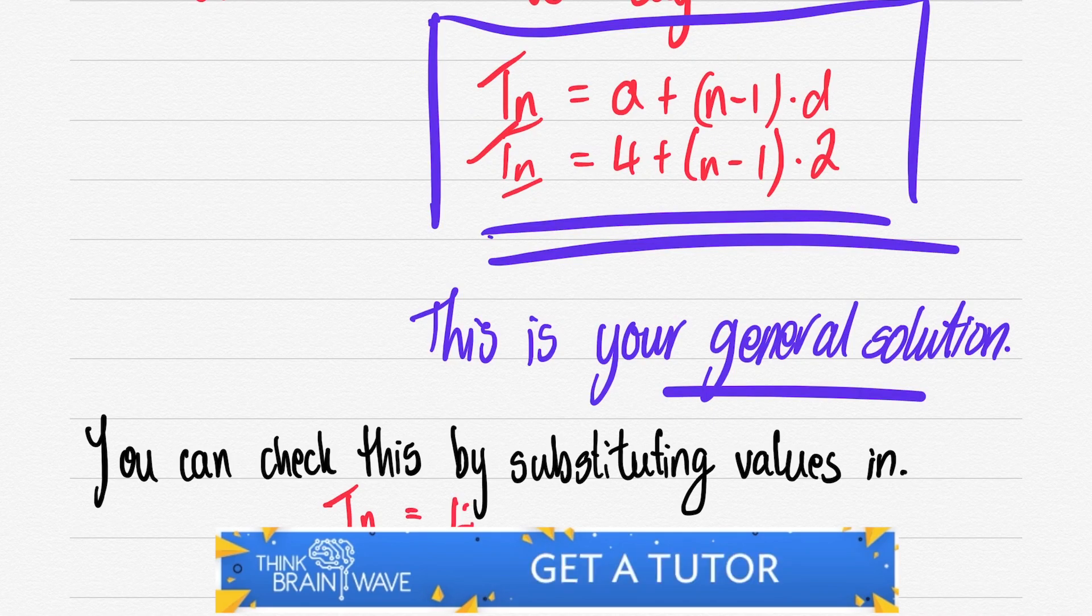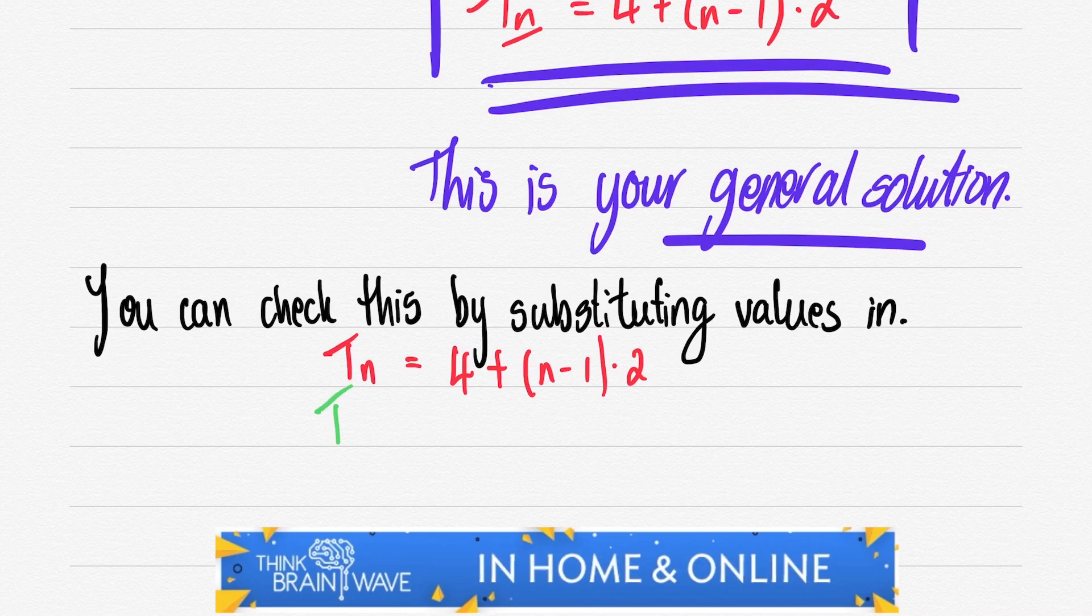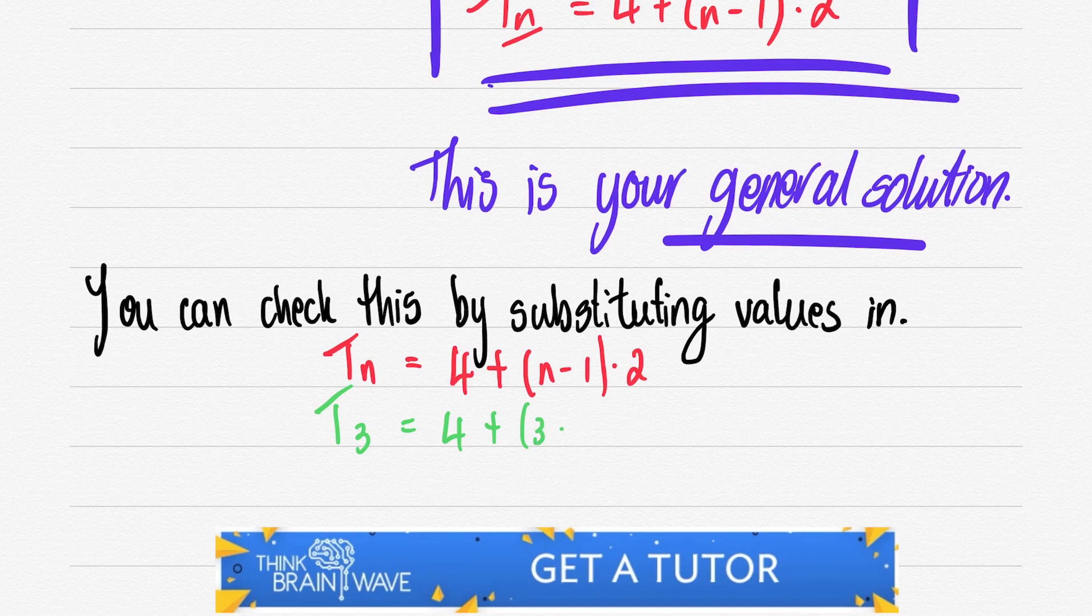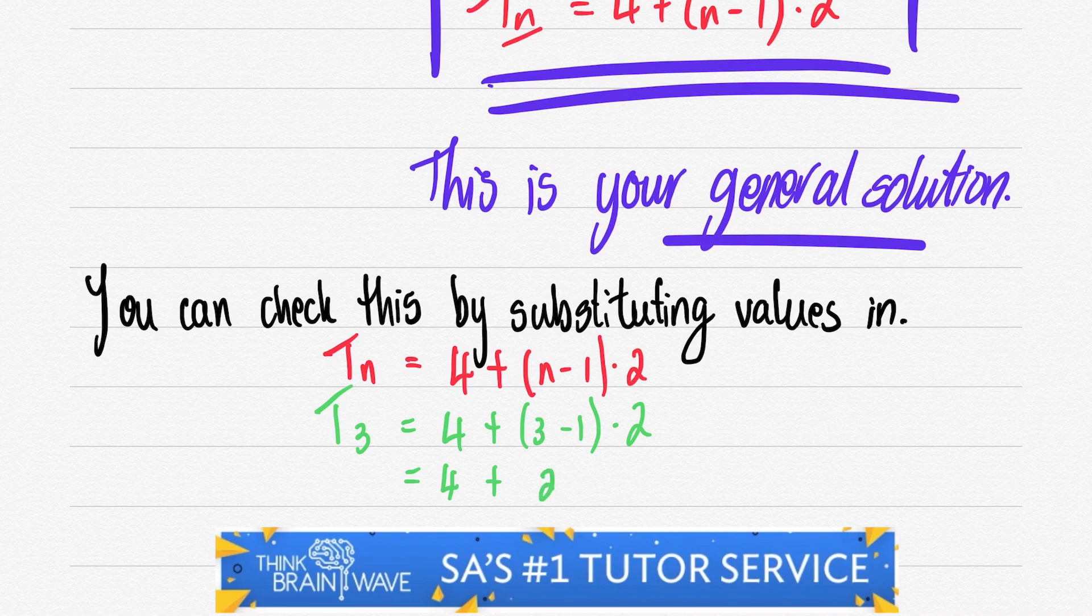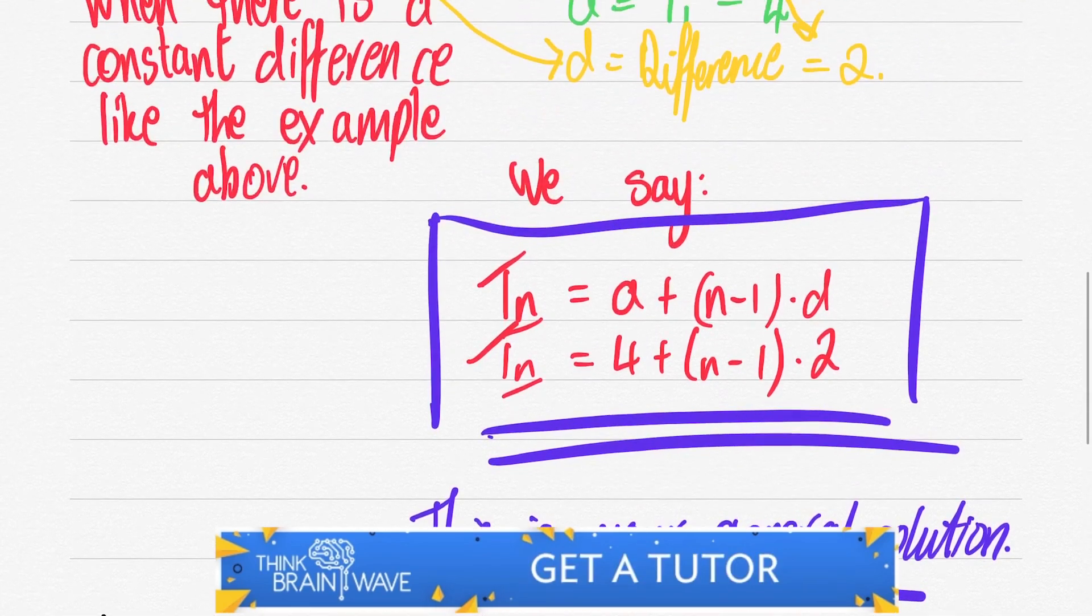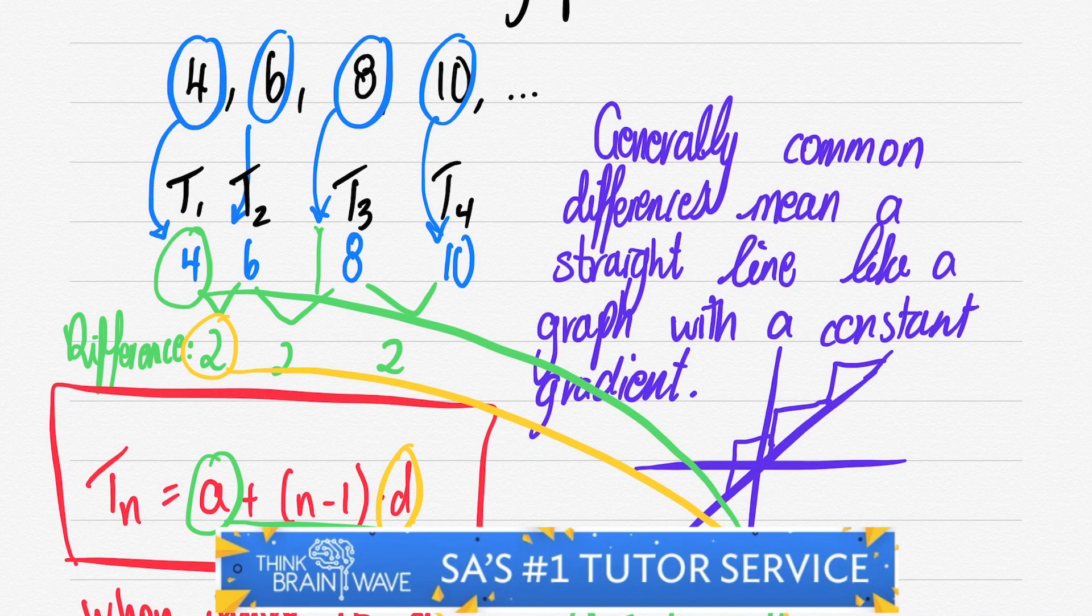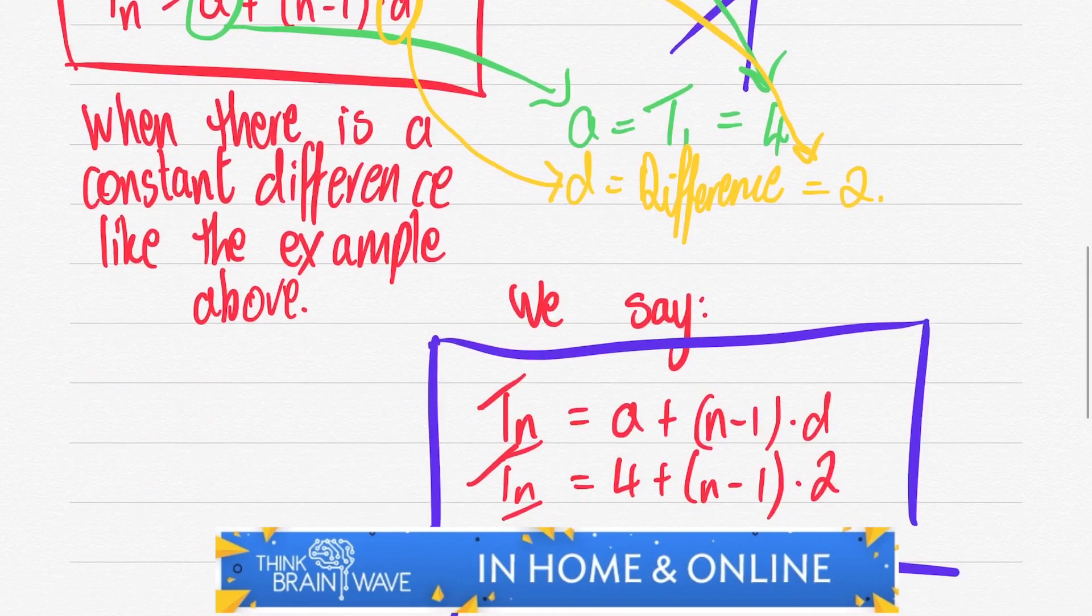So you can take for instance tn is equal to 4 plus n minus 1 times by 2. Let's search for the third term. We say 4 plus 3 minus 1 because n is 3 and we say times by 2. We calculate the answer and we have the answer at 8. Let's look up and see what we've got. The answer is indeed 8 for term 3. And there you go. Easy game.